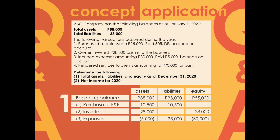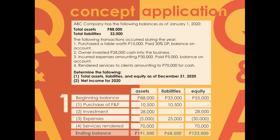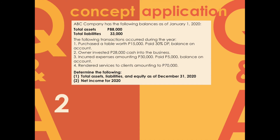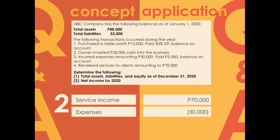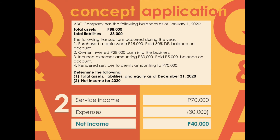Transaction four: rendered services to clients amounting to 70,000 pesos for cash. This results in a 70,000 increase in income — meaning a 70,000 increase in equity — and a 70,000 increase in assets due to cash received. Adding all amounts per column, the balances as of December 31, 2020 are: assets 191,500, liabilities 68,500, and equity 123,000. Net income for 2020: service income of 70,000 less expenses of 30,000 equals net income of 40,000 pesos.